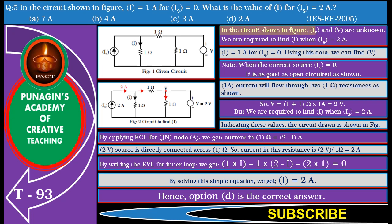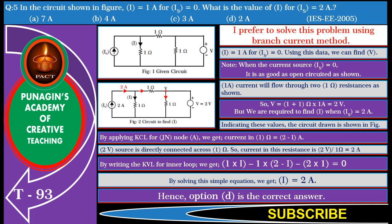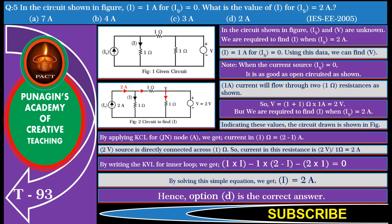Friends, in the circuit shown in the figure, Is and V are unknown. We are required to find I when Is equals 2 amperes. I prefer to solve this problem using the branch current method. It is given that I equals 1 ampere for Is equals 0. Using this data, we can find V. Note, when the current source Is equals 0, it is as good as open-circuited as per the open circuit concept.